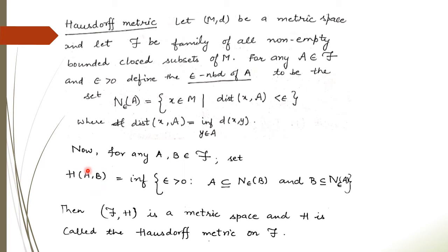The Hausdorff metric H(A, B) is the infimum of all ε ≥ 0 such that A is a subset of the ε-neighborhood of B and B is a subset of the ε-neighborhood of A. This minimum value of ε for which this condition holds becomes the metric, and that metric is called the Hausdorff metric. The family F with respect to this metric is a metric space, and this metric is called the Hausdorff metric on F.